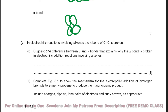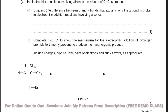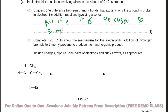In electrophilic addition reactions involving alkenes, the pi bond of the C=C is broken. The difference between sigma and pi bonds that explains this: the pair of electrons in the pi bond are further away from the nuclei, so there is weaker attraction. In the sigma bond, the electrons are closer to the nuclei, giving stronger attraction.